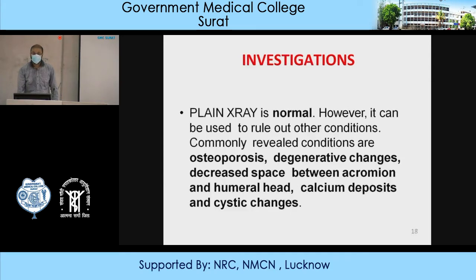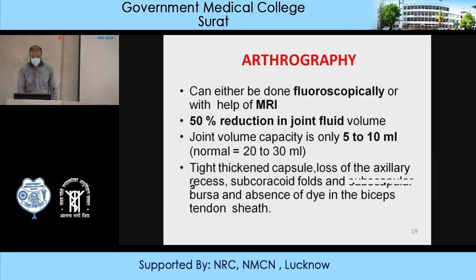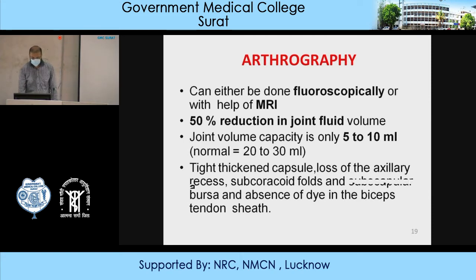For investigations, X-ray will mostly be normal; however, it can be used to rule out other conditions — commonly revealing osteoporosis, degenerative changes, decreased space between acromion and humeral head, calcium deposits, and cystic changes. Arthrography can be done fluoroscopically or with MRI, showing 50% reduction in joint fluid volume with joint volume capacity of only 5 to 10 milliliters. Findings include a thickened tight capsule, loss of axillary recesses, subcoracoid folds, and subscapular bursa with absence of dye in the biceps tendon sheath.